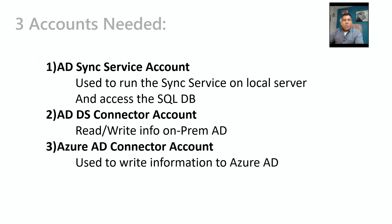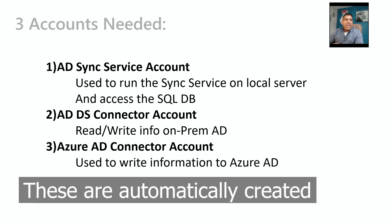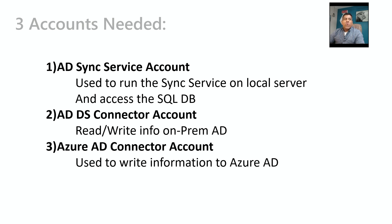For preparation, we need three accounts. The first is the AD sync service account, which is used to run the sync service on the local server and to access the SQL database. You can use an external SQL server, or if you don't have one, the agent will install its own local database. For a small Active Directory that's fine; for an enterprise you may need a dedicated SQL solution. The second account is the ADDS connector account — Active Directory Directory Services — used to read and write information from the on-premises AD and push it to the cloud.